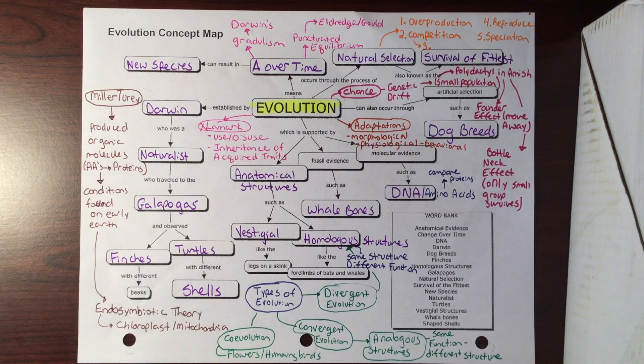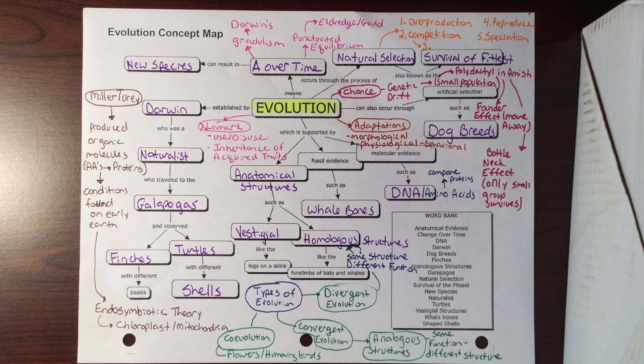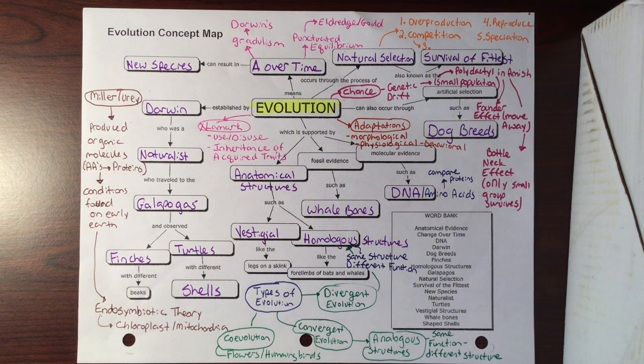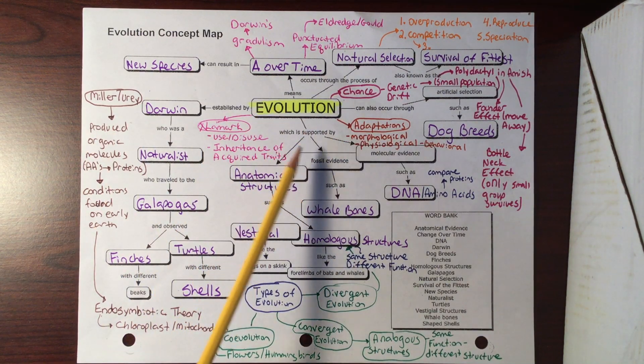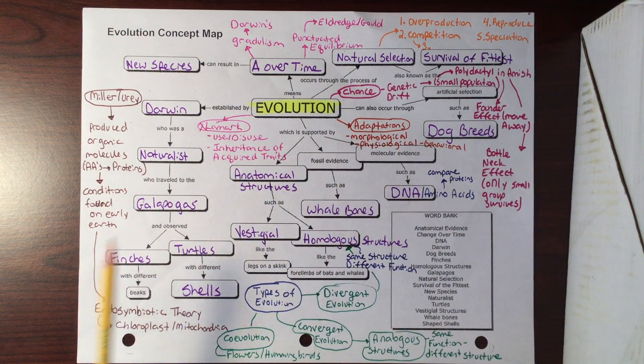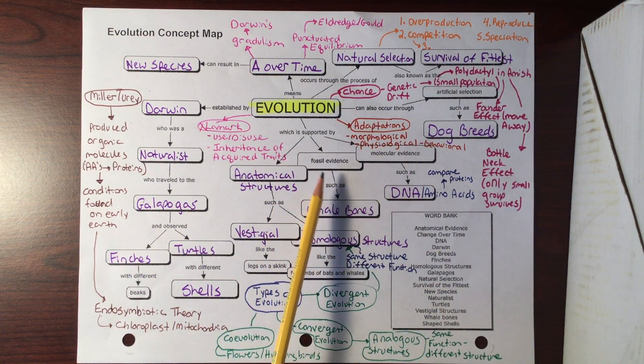He looked at tortoises and the shells, the shapes of the shells, and the way that they were arranged. We also have finches that he looked at. On those different Galapagos Islands, we talked about the different beaks of those particular finches and how they changed.